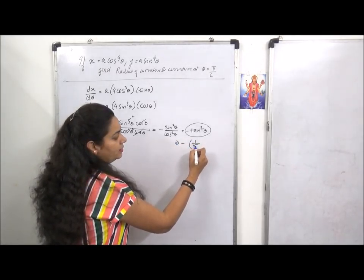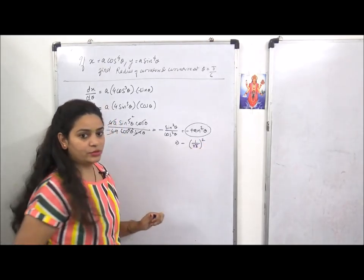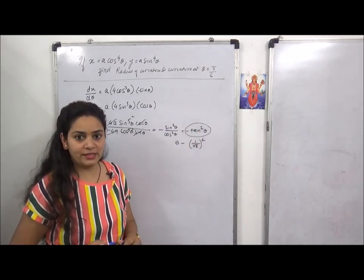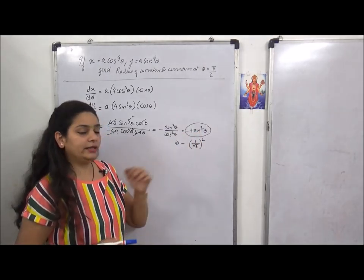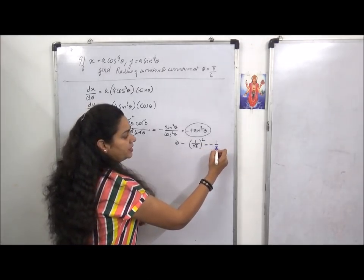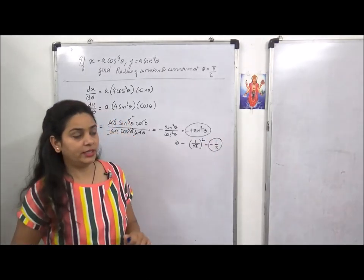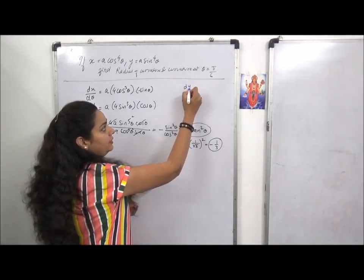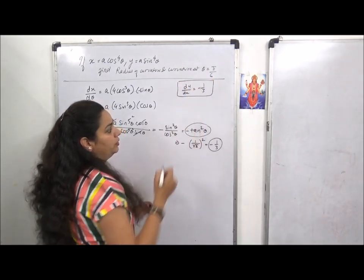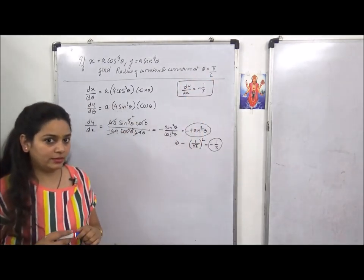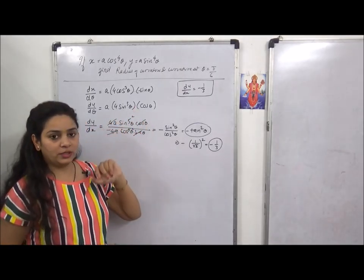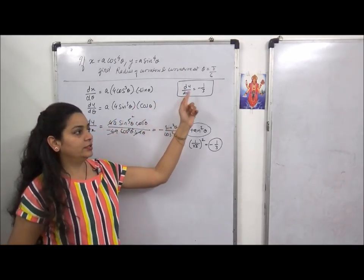This is our dy by dx final answer. But we are given a value in the problem - theta is pi by 6. So putting theta equals pi by 6, we get minus 1 by root 3 squared. Because tan of pi by 6 is tan 30 which is 1 upon root 3. After simplification I get minus 1 by 3. So dy by dx is minus 1 by 3, which I've written here separately.